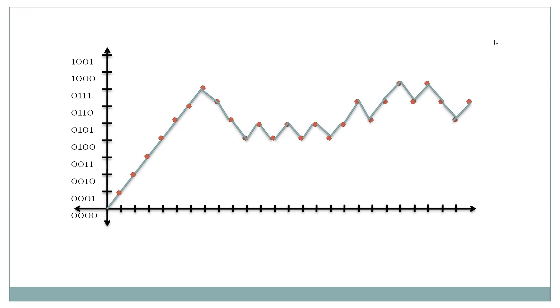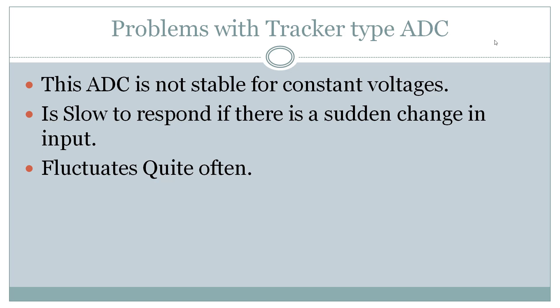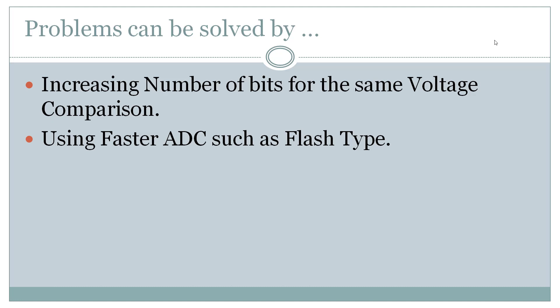While observing the working of the tracker type ADC, we saw how it fluctuates with a constant signal and data loss in the start of the counter. So in the next video, we will see another type of converter which is fast and has less fluctuations, the flash type ADC.